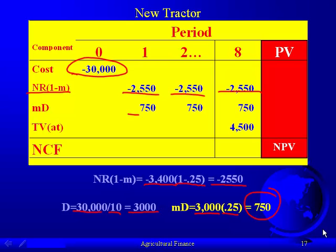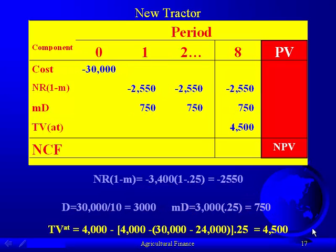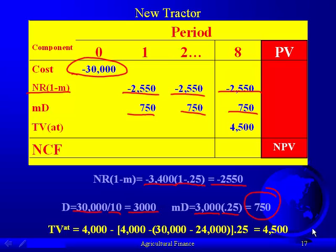The tax savings is $750 per year over that eight-year horizon. For the after-tax terminal value, we've plugged this into our formula. Our cost was $30,000. Our accumulated depreciation was $24,000, which is $3,000 times eight.